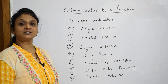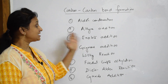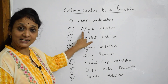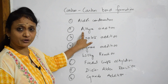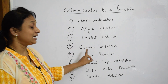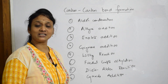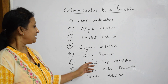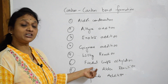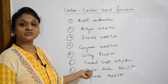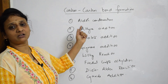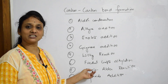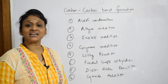The reactions under carbon-carbon bond formation include: aldol condensation reaction, alkyne addition reactions, enolate addition, Grignard addition (where we use RMgX or RMgBr and add it to the compound), the Wittig reaction, Friedel-Crafts alkylation in the presence of anhydrous AlCl₃, the Diels-Alder reaction — for all of which I'll explain the reaction and mechanism.